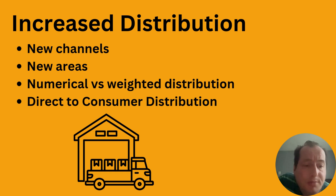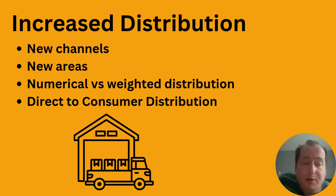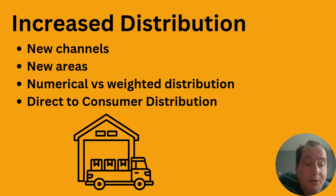You look at numerical versus weighted distribution. Increased distribution can mean selling in more stores, but also improving how you distribute — selling more to the same store. A lot of companies are also doing direct-to-consumer distribution, where you bypass the retail channel and deliver directly to the consumer, whether through a delivery service for razor blades, coffee delivered to your house, or ice cream in warmer countries where it's better to cut out the middleman to keep temperature and quality consistent.